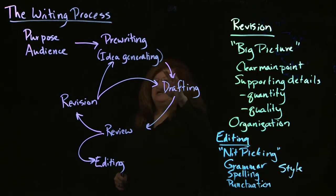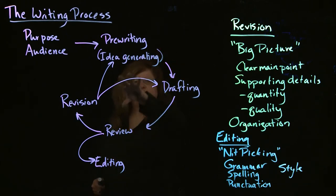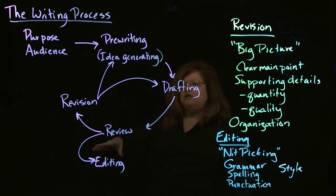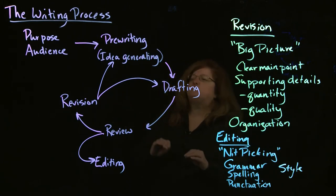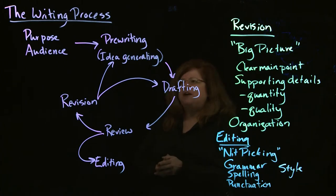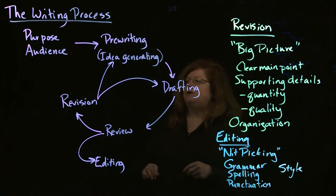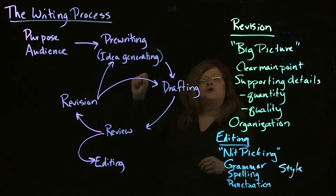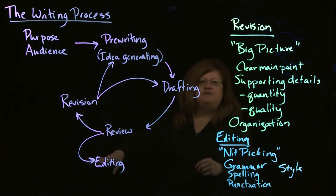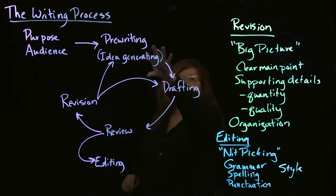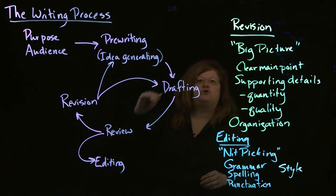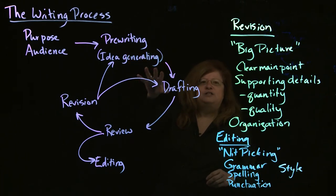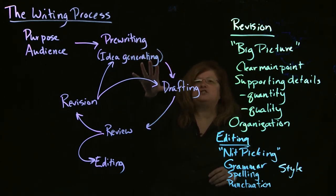We save the editing for last and don't put it into the big cycle, for a couple of reasons. One is that if you have a really troublesome sentence and you spend 20 or 30 minutes making it perfect, then do some revision and end up deleting that sentence, you've wasted all that work. The other important reason is that if you get caught up in grammar during pre-writing and drafting, that is absolutely a recipe for writer's block. If you think it has to be perfect from the get-go, you'll get hung up on grammar, your ideas will stop flowing, and you'll get really stuck.